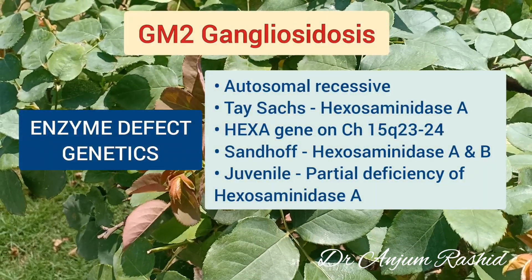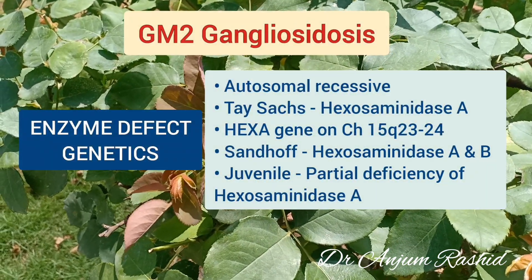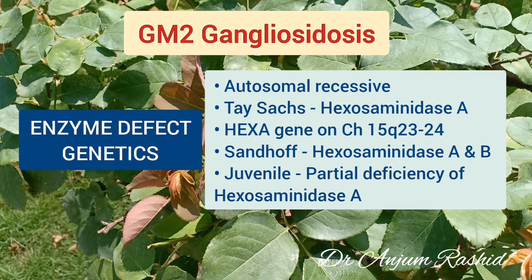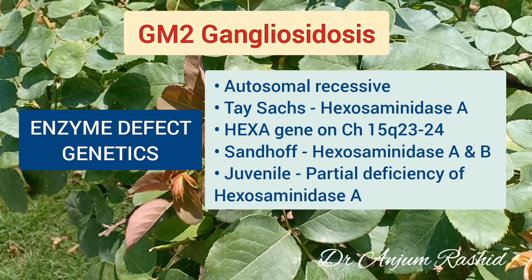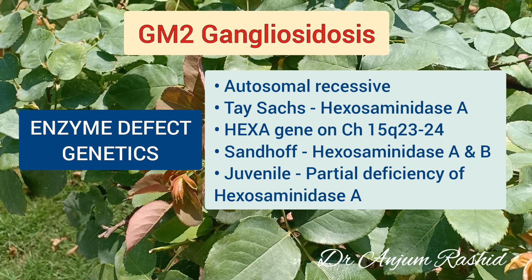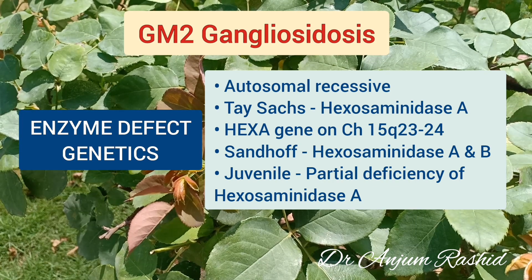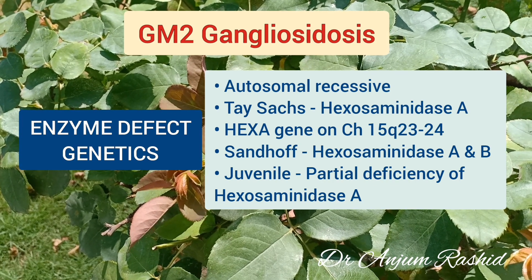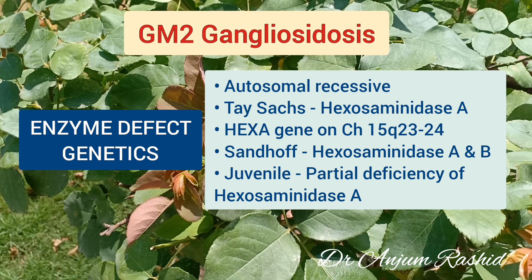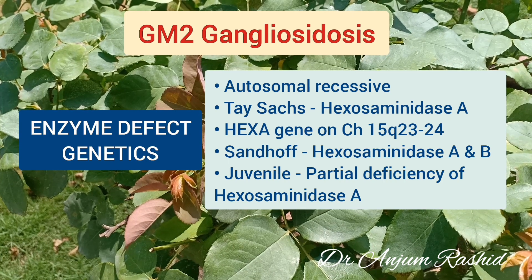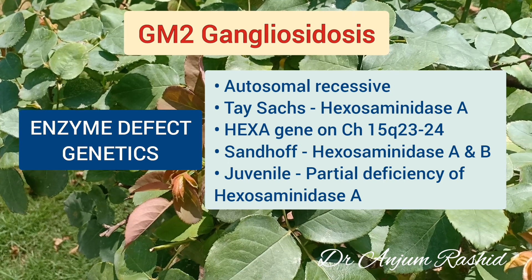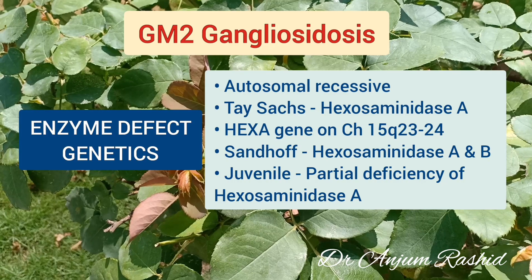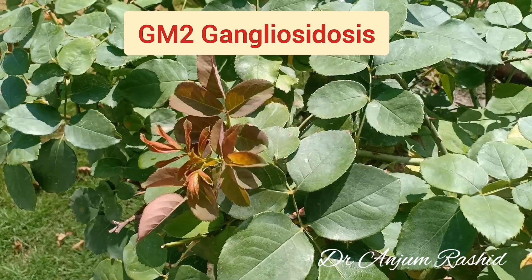GM2 gangliosidosis are autosomal recessive. Tay-Sachs disease is due to deficiency of lysosomal enzyme Hexosaminidase A, and the gene is located on chromosome 15. Sandhoff disease is due to deficiency of enzyme Hexosaminidase A and B, while in juvenile form there is partial deficiency of Hexosaminidase A.